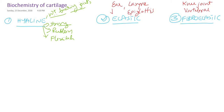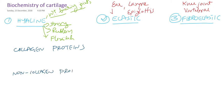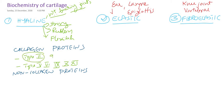Now we will see the biochemistry of cartilage. The composition of hyaline cartilage can be divided into two categories: collagen proteins and non-collagen proteins. The collagen protein present in hyaline cartilage is mainly type 2 collagen — accounting for 90 to 98 percent of all collagen — along with minor amounts of types 5, 6, 9, 10, and 11.